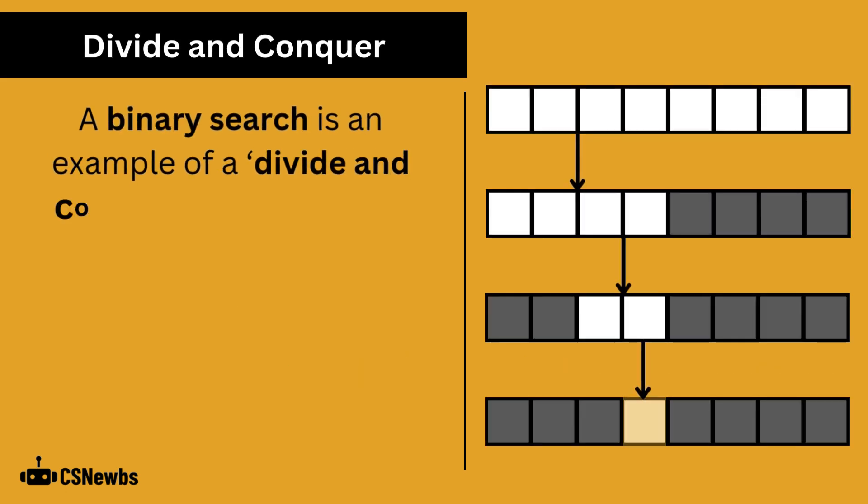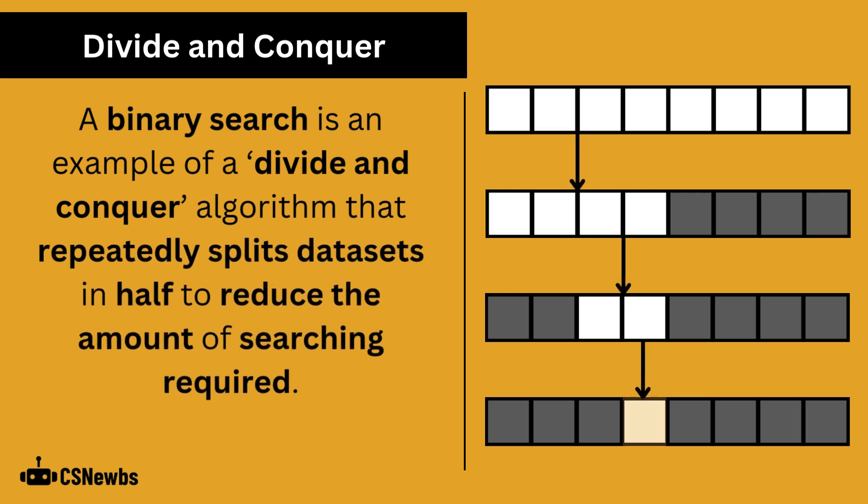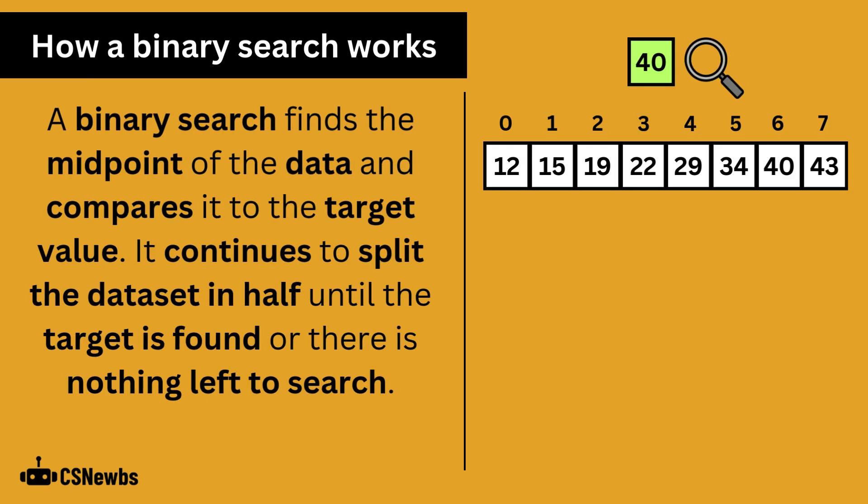A binary search is an example of a divide and conquer algorithm that repeatedly splits data sets in half to reduce the amount of searching required. A binary search finds the midpoint of the data and compares it to the target value. It continues to split the data set in half until the target is found or there is nothing left to search.